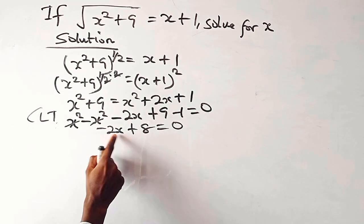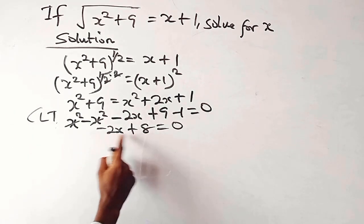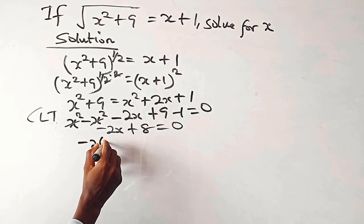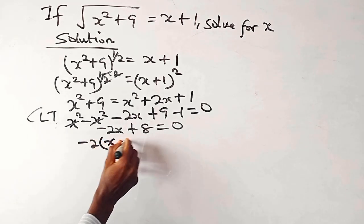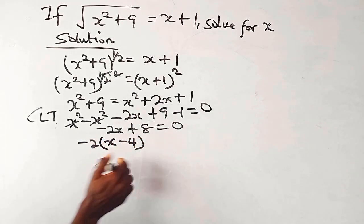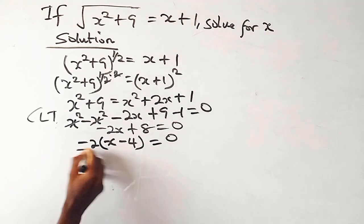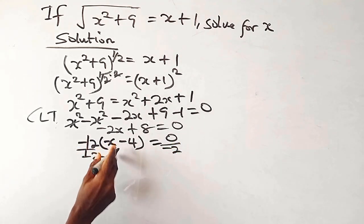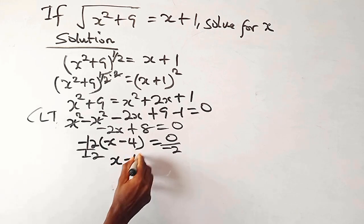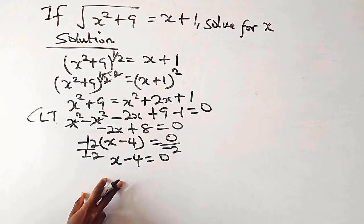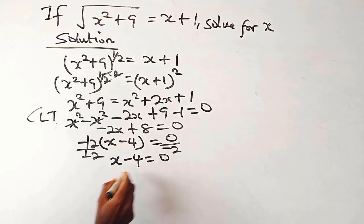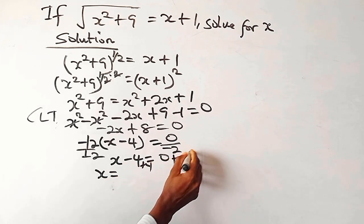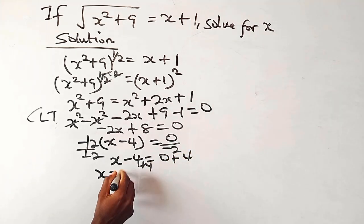We can use minus 2 to factor out: minus 2 times x minus 4 equals 0. Dividing both sides by minus 2, we have x minus 4 equals 0. Adding 4 to both sides gives x equals 4.